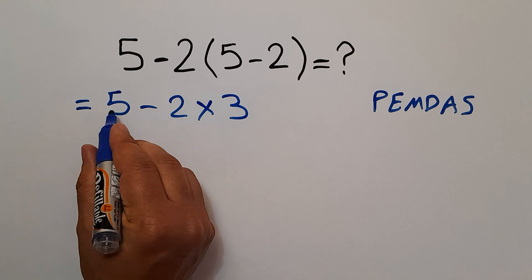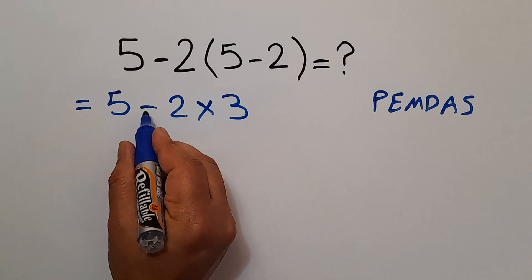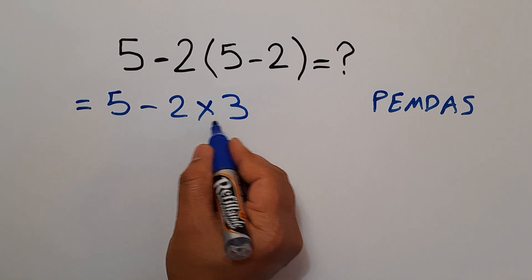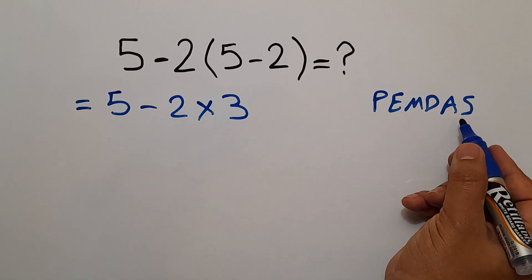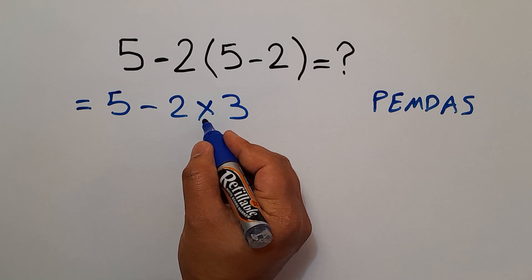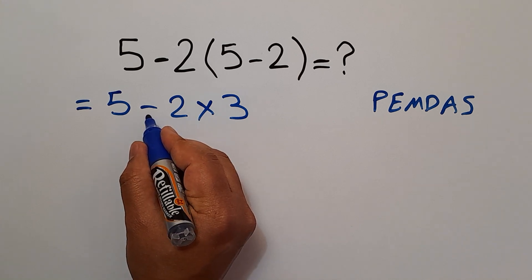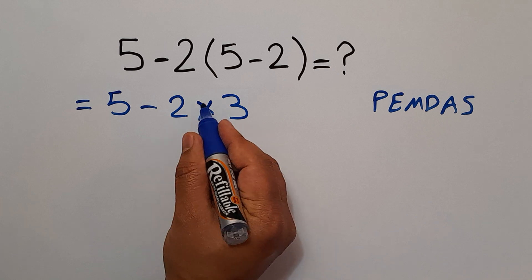Here in this expression we have one subtraction and one multiplication. According to the PEMDAS, multiplication comes before subtraction. So we first do this multiplication.